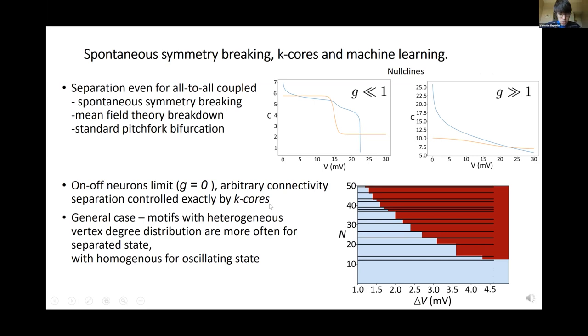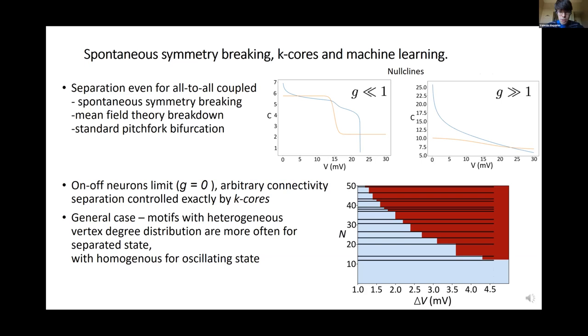In the more general case, when we have firing rate-based model with non-step function, but with proper sigmoid, and when we have arbitrary connectivity, we see that particular motifs with more heterogeneous vertex degree distributions are more often in separated states, while homogeneous are more often in oscillating states. Basically, the motifs that are more often in separated states are always more heterogeneous, and those more often in oscillating phase are always more homogeneous, which indicates that indeed separation happens when we have two heterogeneous networks.